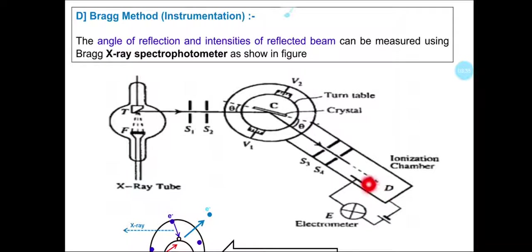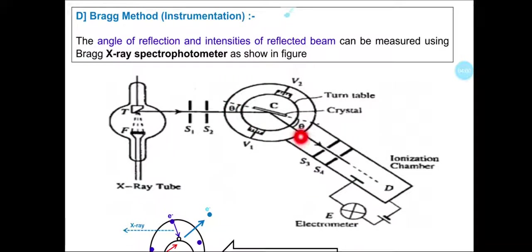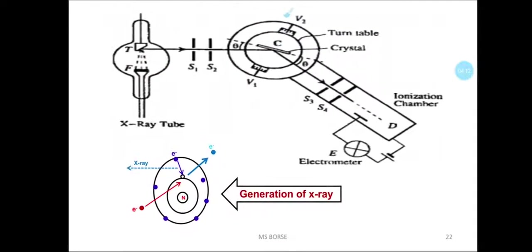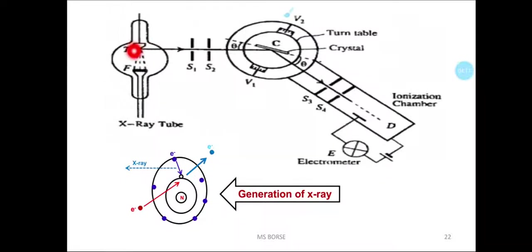Along the movable table or goniometer there is a detector — an ionization detector. For this spectrometer, a gas ionization detector is used. The beam reflected by the crystal plane is detected by this detector, allowing us to determine the glancing angle, angle of reflection, and angle of incidence. Now let us see how X-rays are generated in the X-ray tube — the source of X-rays — at the atomic level. The metal source used, as discussed in the previous lecture, includes metals like copper and iron.